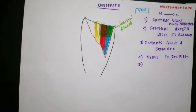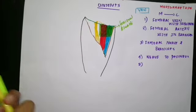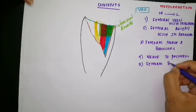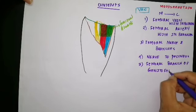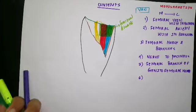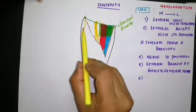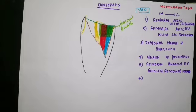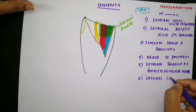The second nerve lies in close relation to the femoral artery inside the femoral sheath and pierces the lateral aspect of the femoral sheath - this is the femoral branch of the genitofemoral nerve. The third nerve runs across the lateral angle of the femoral triangle and supplies the anterolateral aspect of the thigh and lateral aspect of the gluteal region - this is the lateral cutaneous nerve of the thigh.